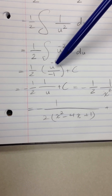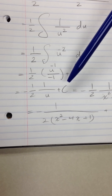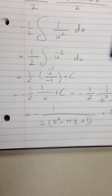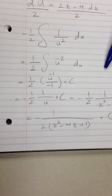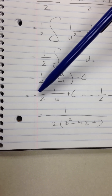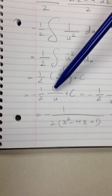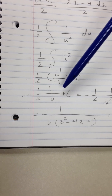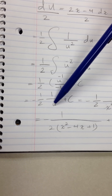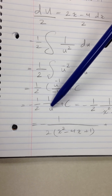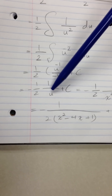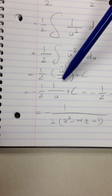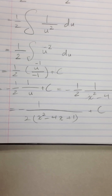Now we integrate: applying the power rule, u⁻² integrates to u⁻¹ divided by negative 1, plus C — don't forget the C. This simplifies to negative 1 over 2 multiplied by 1 over u, since bringing u to the denominator changes the sign of the power, plus C.